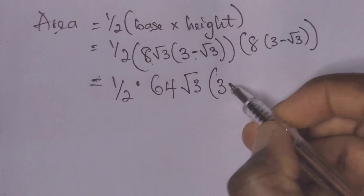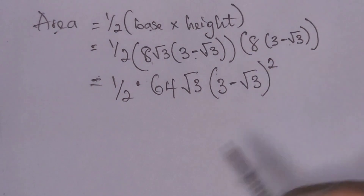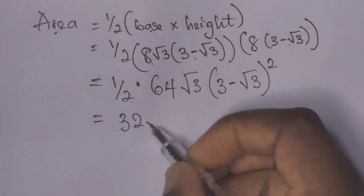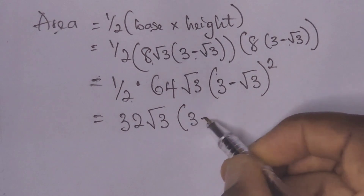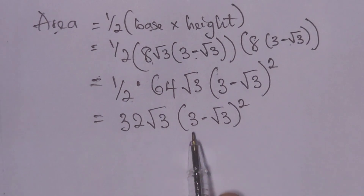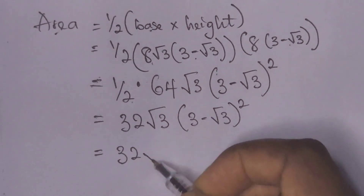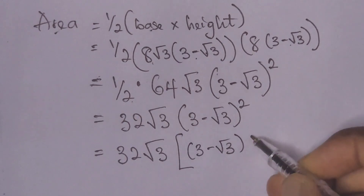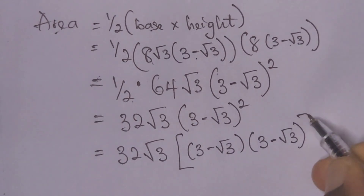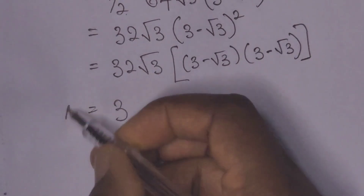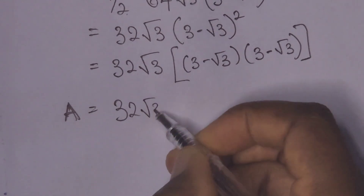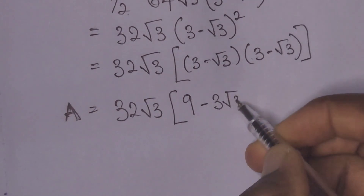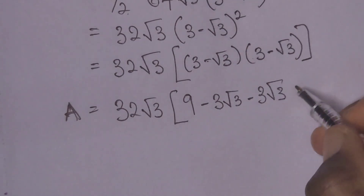This equals 64 divided by 2, which is 32 root 3, times (3 minus root 3) squared. Now expanding (3 minus root 3) squared, which is (3 minus root 3) times (3 minus root 3), gives us 9 minus 3 root 3 minus 3 root 3 plus 3.